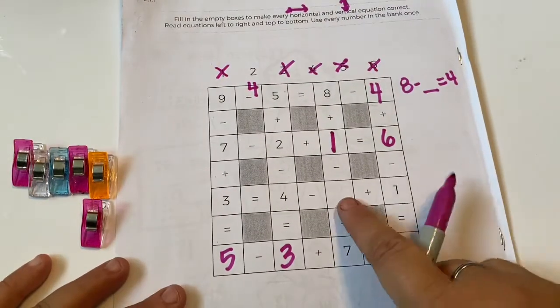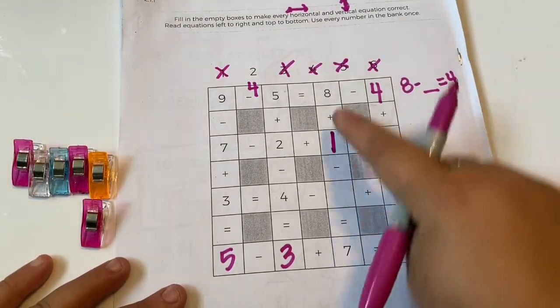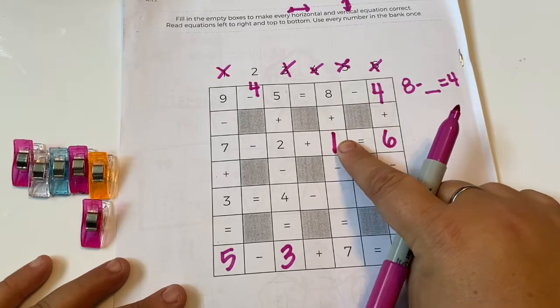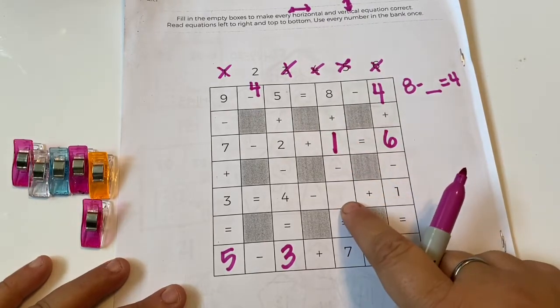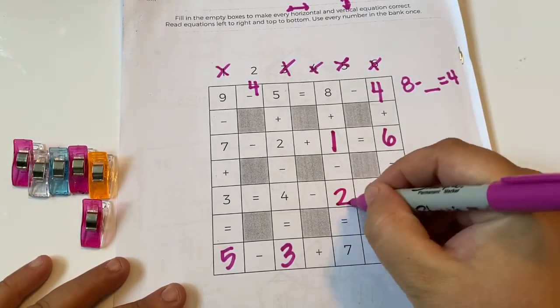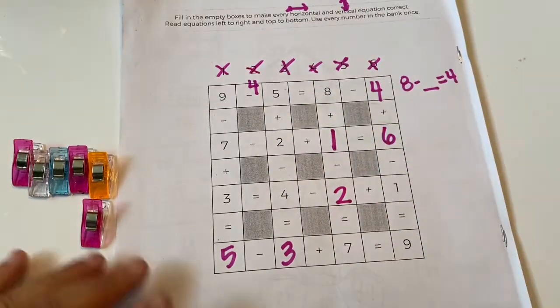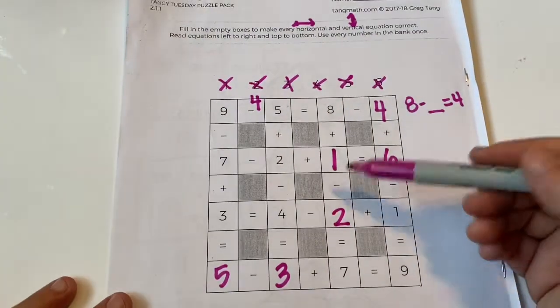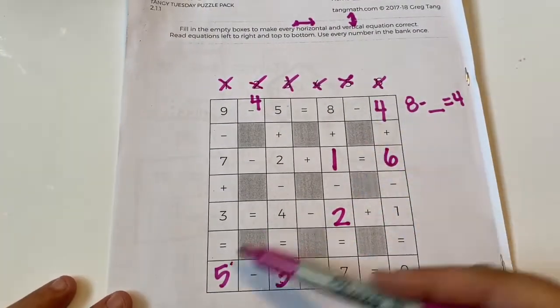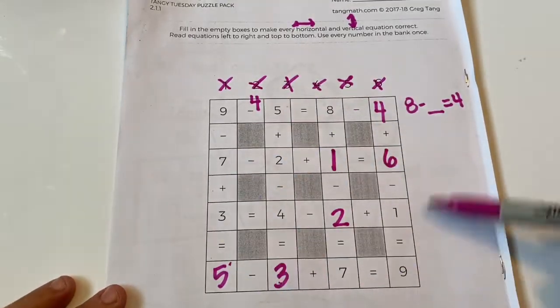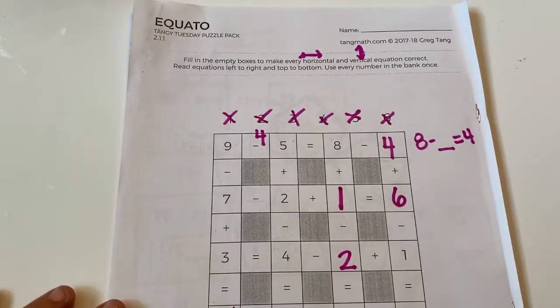So the only number we have left is two, but I'm gonna check. Eight plus one is nine minus two is seven. So we used all of the numbers only once: one, two, three, four, five, six. And we filled in all the blanks. And that's how you do equeto.